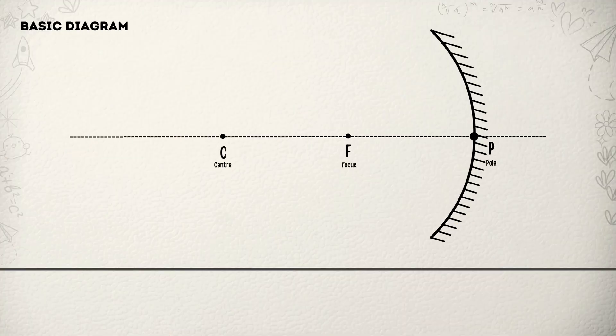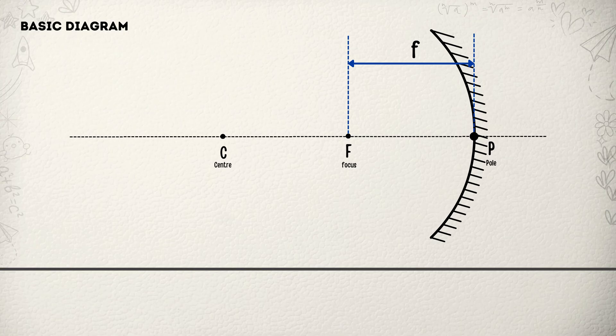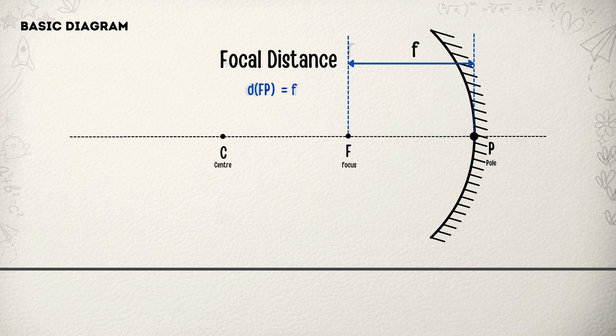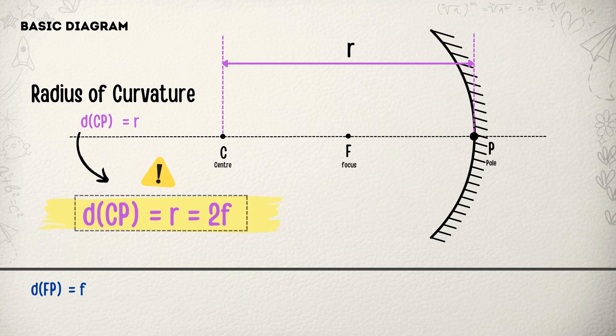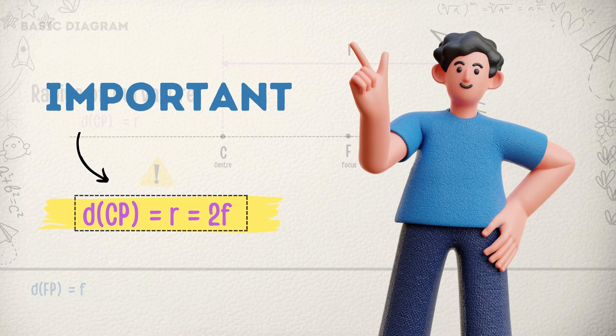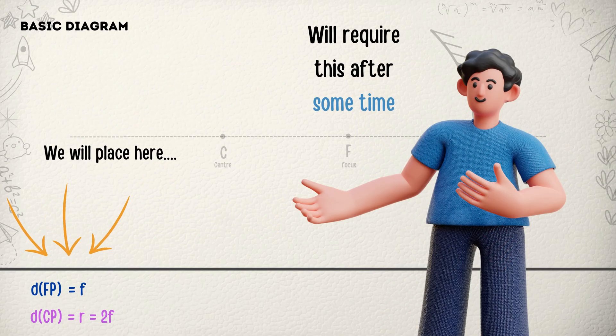We will start with the basic diagram of a concave mirror. In this diagram, distance between pole P and focus F is called focal distance, which is denoted by letter f. And distance between pole and center is called radius of curvature, which is denoted by letter r. This r is always equal to 2 times f. Just remember this till the end. So for now, let's keep these things aside.